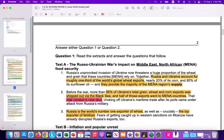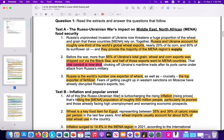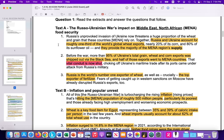Paper 2 is usually an hour and 45 minutes. You choose one of two questions. And so here we have some snippets of information from those articles. So just a quick overview, text A, Russian-Ukrainian wars impact on Middle East, North African nations, also known as MENA.